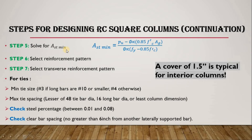Step six: select the reinforcement pattern. You will use a table to select the reinforcement pattern when designing a reinforced concrete square column. After calculating the minimum steel area, you look up the appropriate bar arrangement from the table.